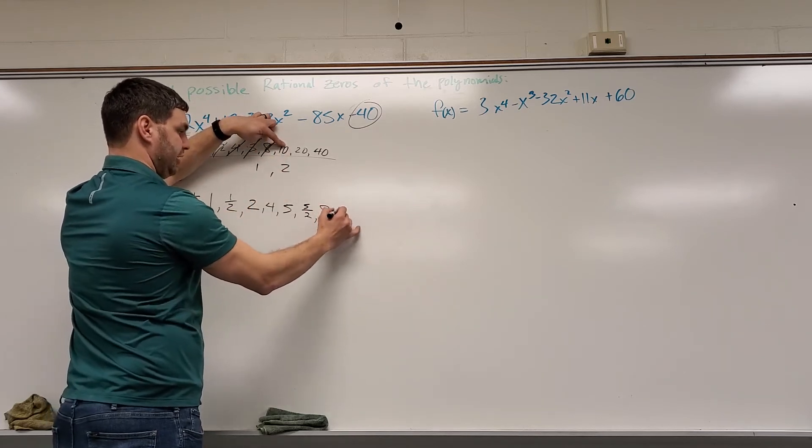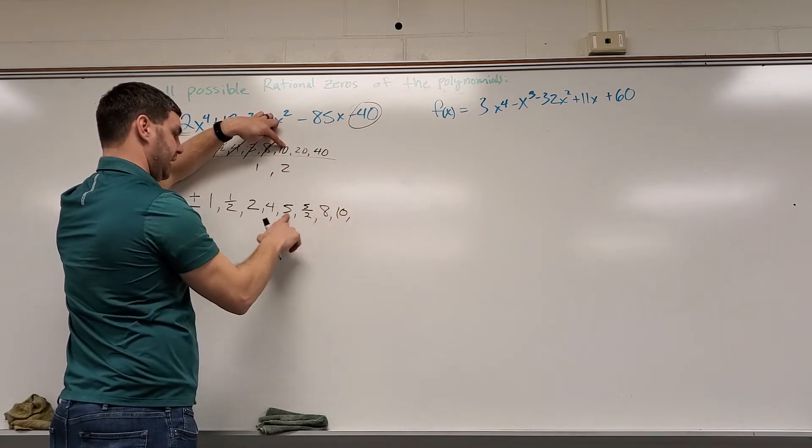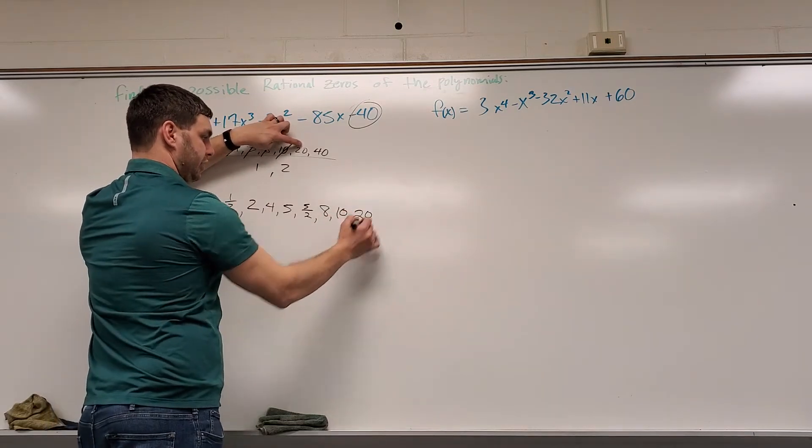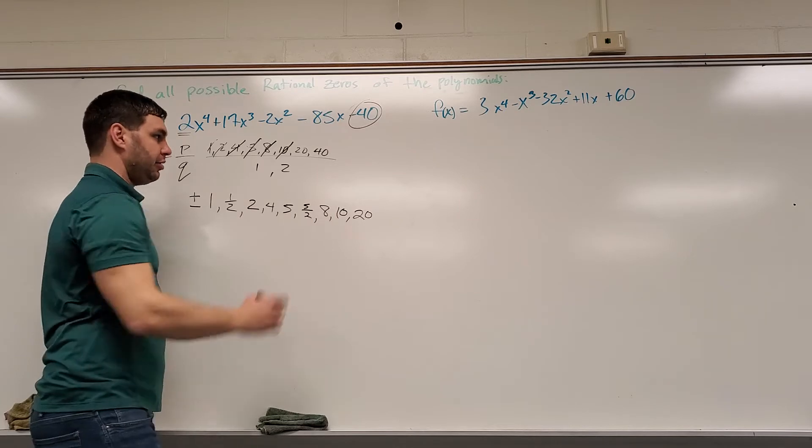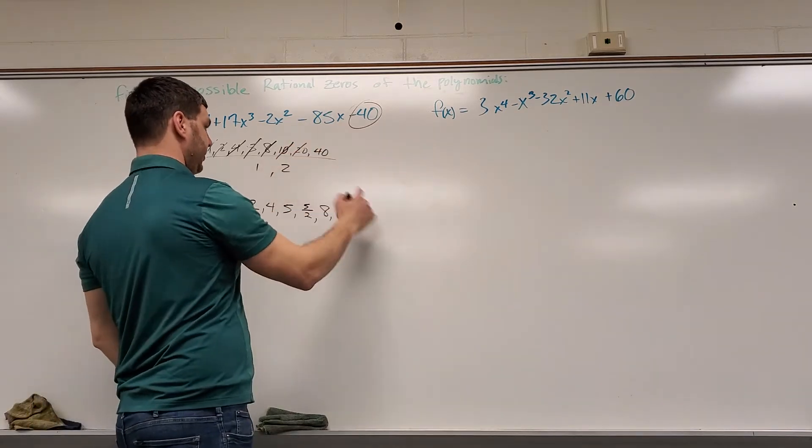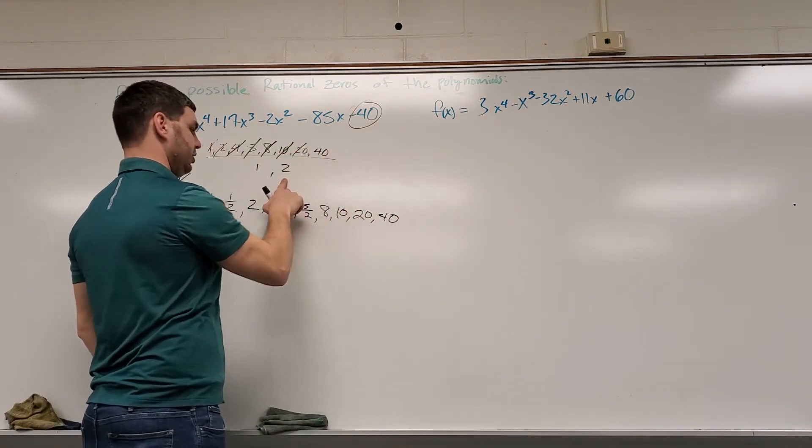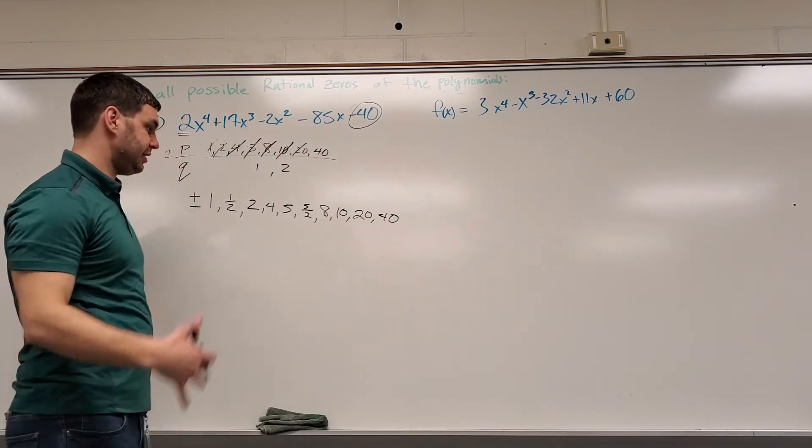10, 10 over 1 is 10. 10 over 2 is 5, I have 5 already. 20, 20 over 1 is 20. 20 over 2 is 10. I just got that one last time. And then 40, 40 over 1 is 40. 40 over 2 is 20, and again, for the last time.